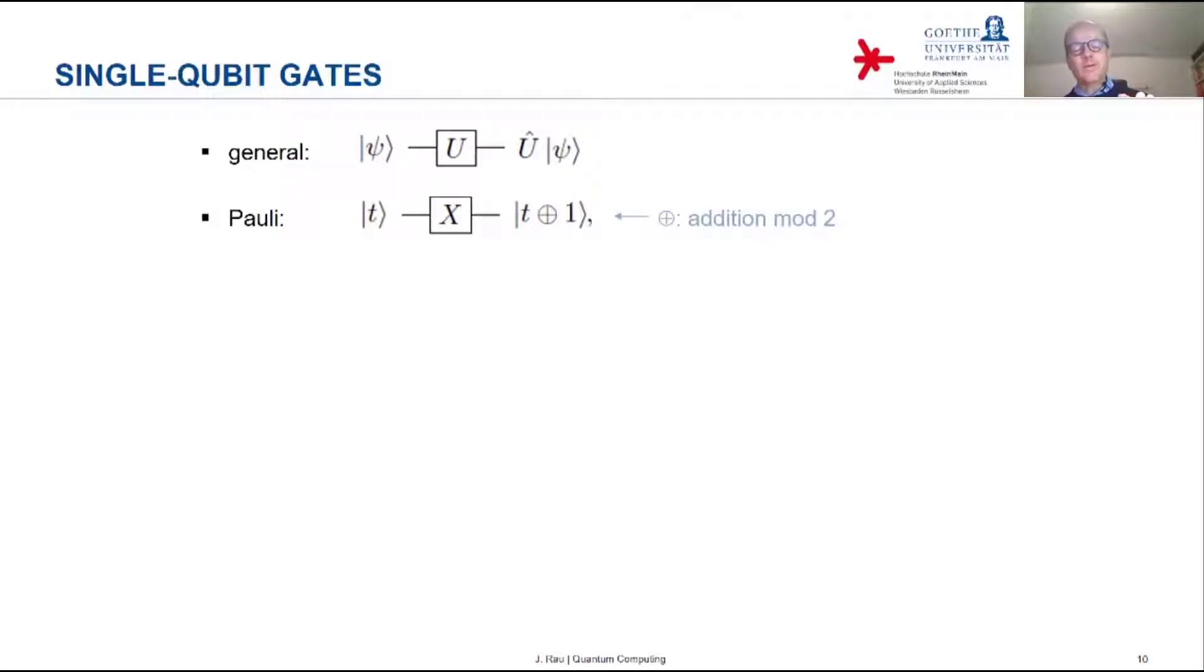So the Pauli operator also performs a unitary transformation. And here's the Pauli X. The action on a basis state is that it flips the basis state. So the basis state one is transformed to basis state zero and vice versa. A compact way of writing this is to say if the input is a basis state t, where t is zero or one, then the output is t plus one mod 2.